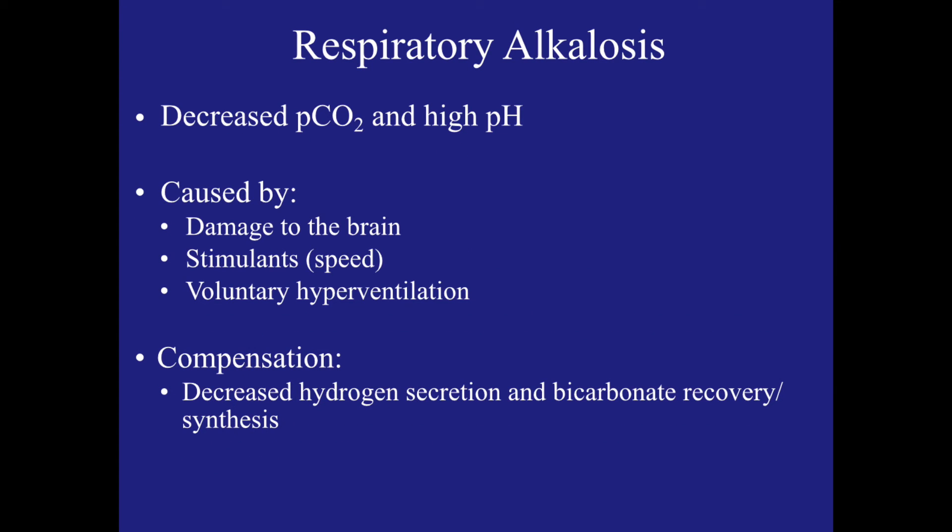Last of all we have respiratory alkalosis. This is caused by a decrease of the partial pressure of CO2 of arterial blood and a pH of greater than 7.42, due to increased loss of CO2 due to hyperventilation. This is caused by damage to the brain, stimulants like speed, or voluntary hyperventilation. The compensation for this is decreased hydrogen secretion and bicarbonate recovery and synthesis by the kidney.